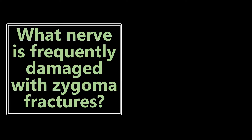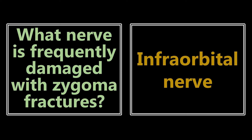What nerve is frequently damaged with zygoma fractures? This is the infraorbital nerve. With a zygomatic arch or zygoma fracture, there will likely be damage to the infraorbital nerve, presenting as paresthesias of the ipsilateral lower eyelid, ipsilateral upper lip, and ipsilateral nose. Know that distribution.